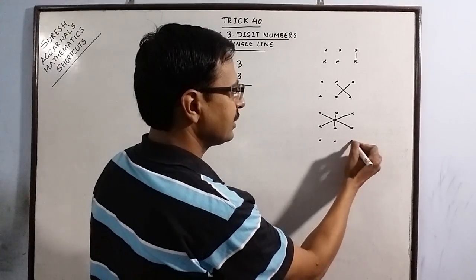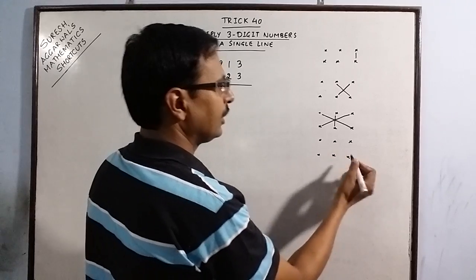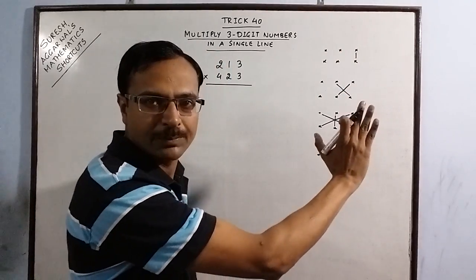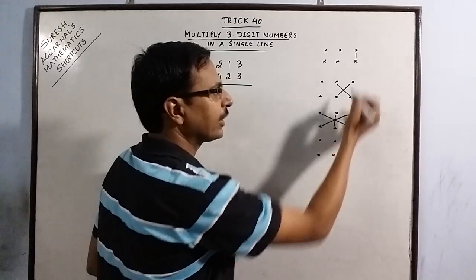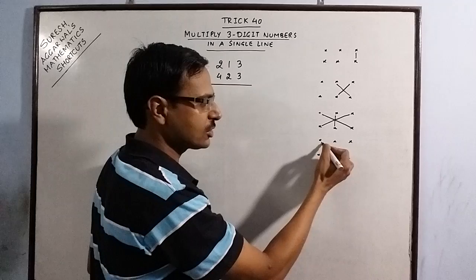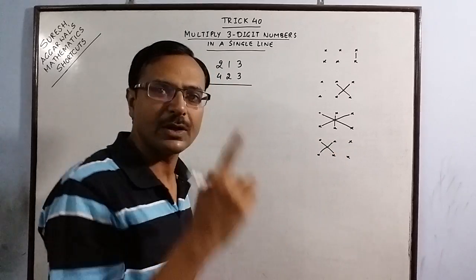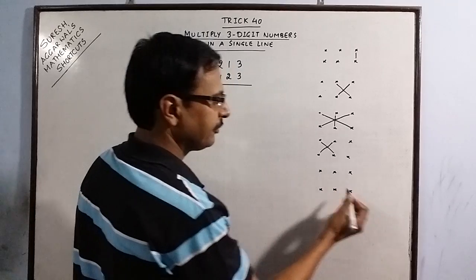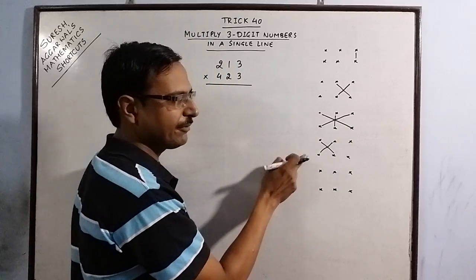Now the fourth digit. Now since we have covered one pair then two pair then three pairs we are done up with all pairs now. So we forget this pair now and we are left with these two pairs. So we cross multiply. Whenever we have two pairs we cross multiply.